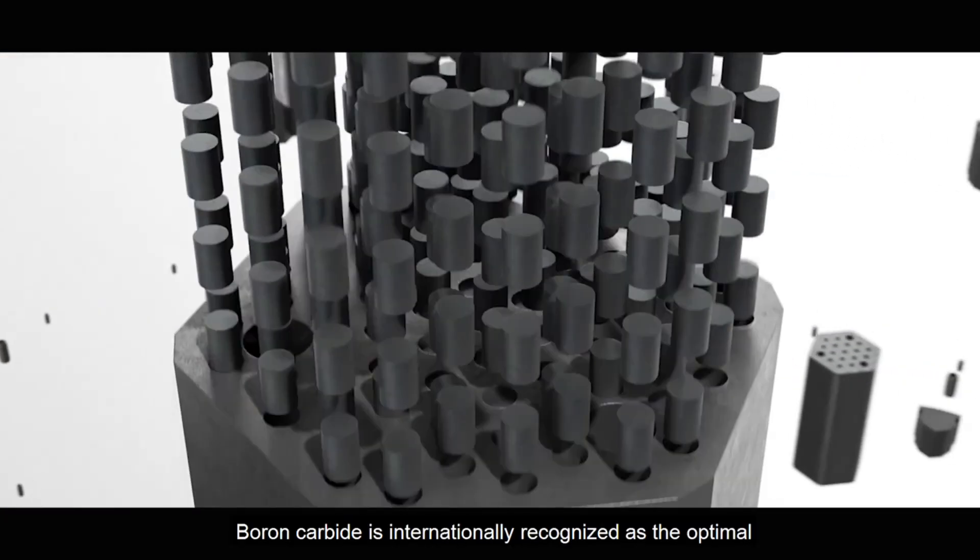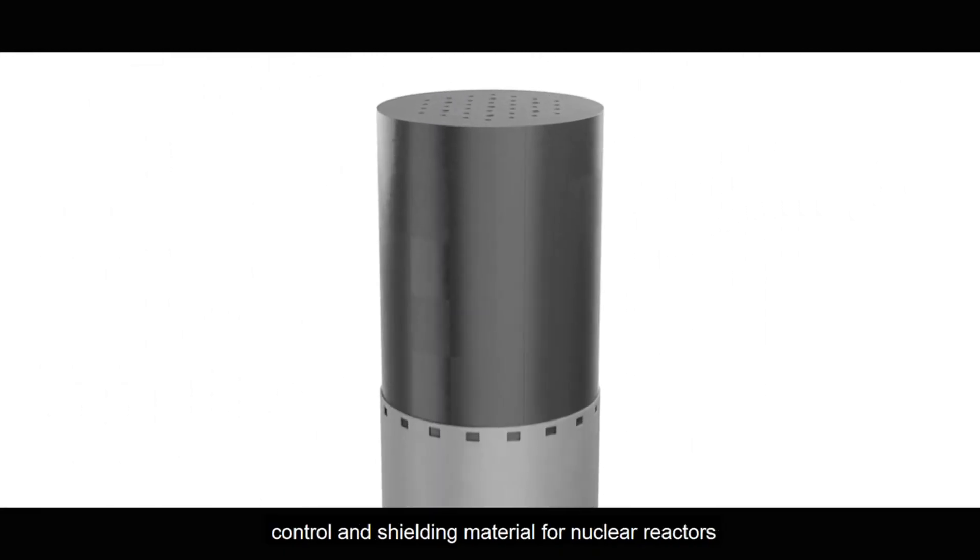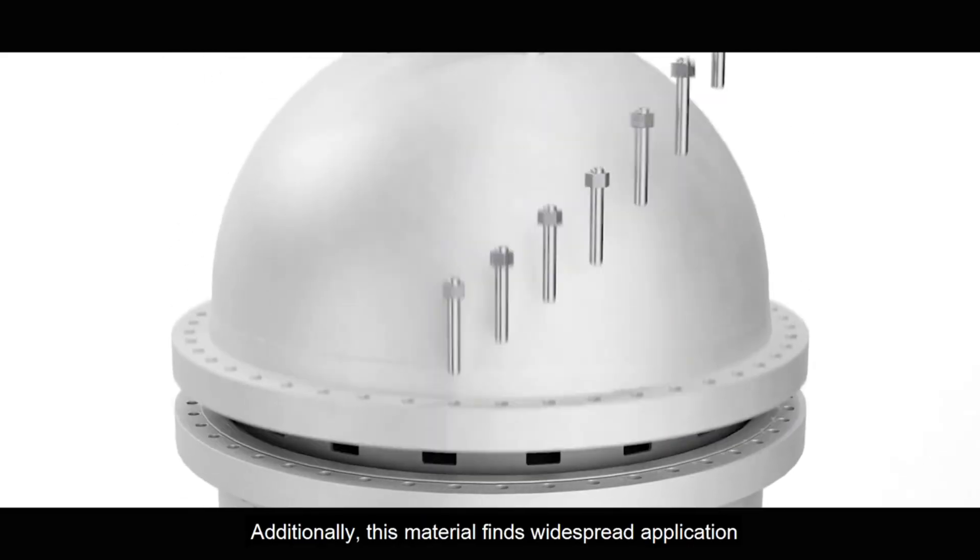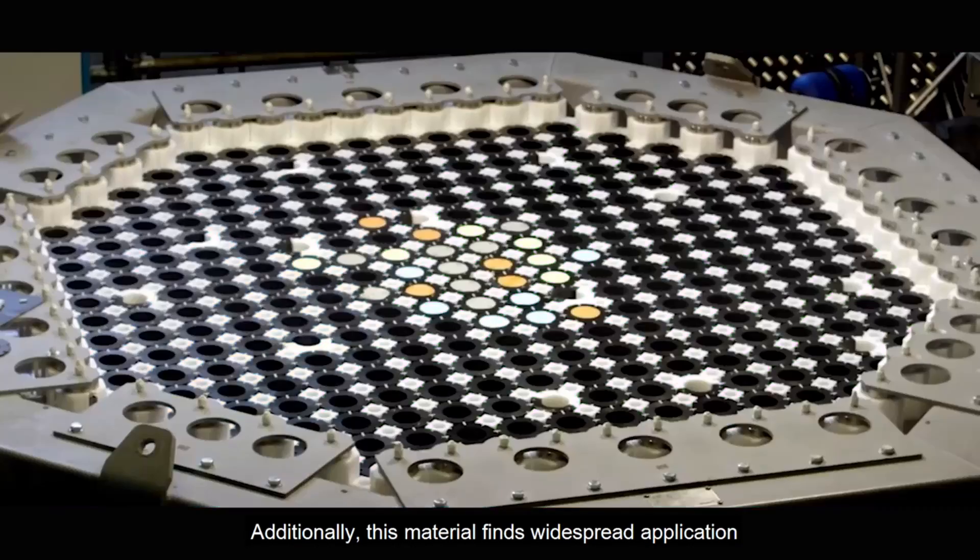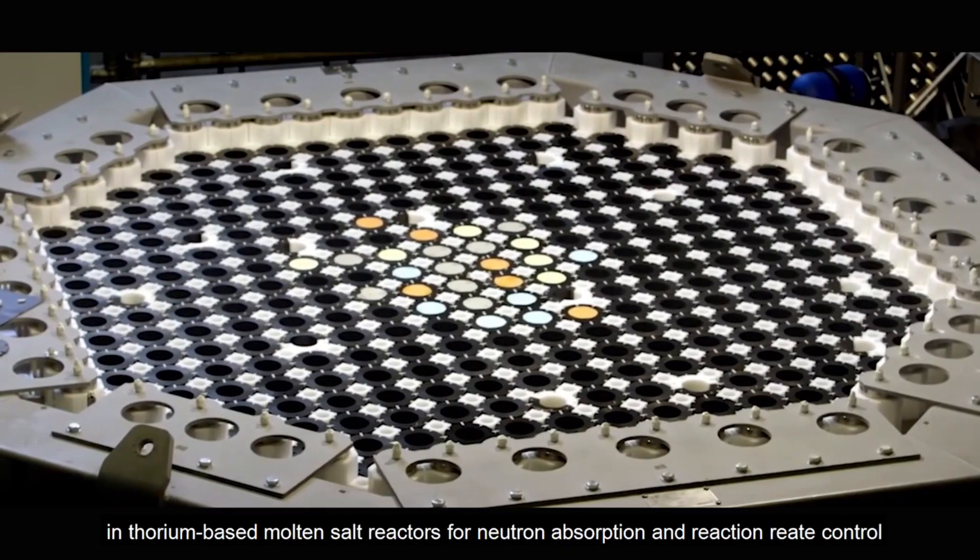As a result, boron carbide is internationally recognized as the optimal control and shielding material for nuclear reactors. Additionally, this material finds widespread application in thorium-based molten salt reactors for neutron absorption and reaction rate control.